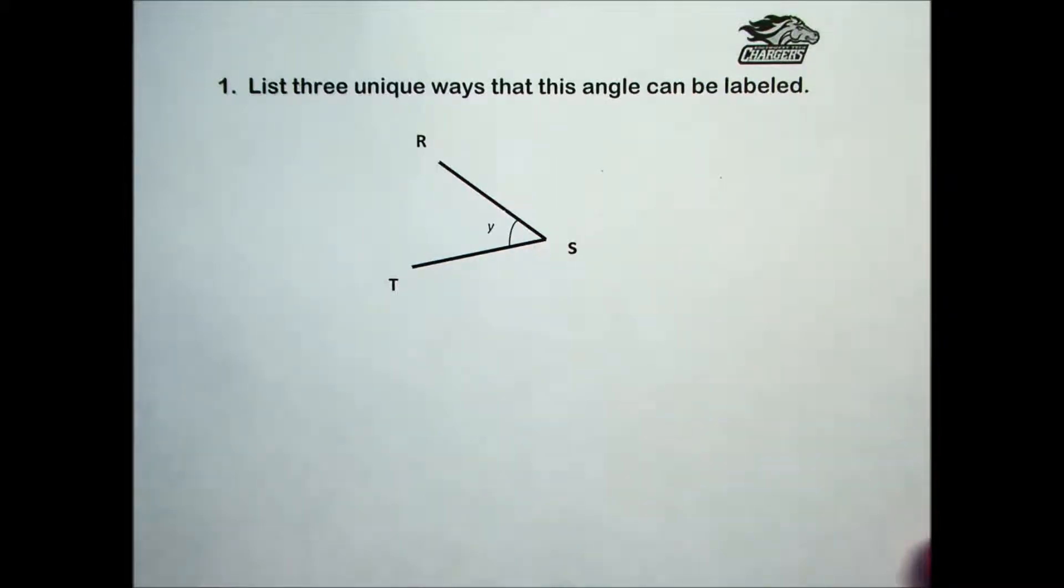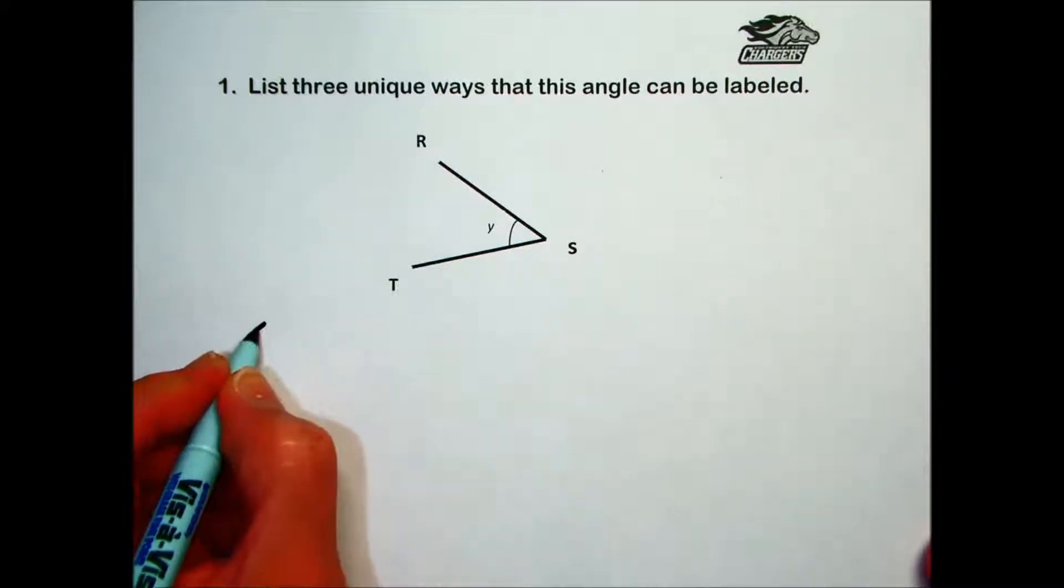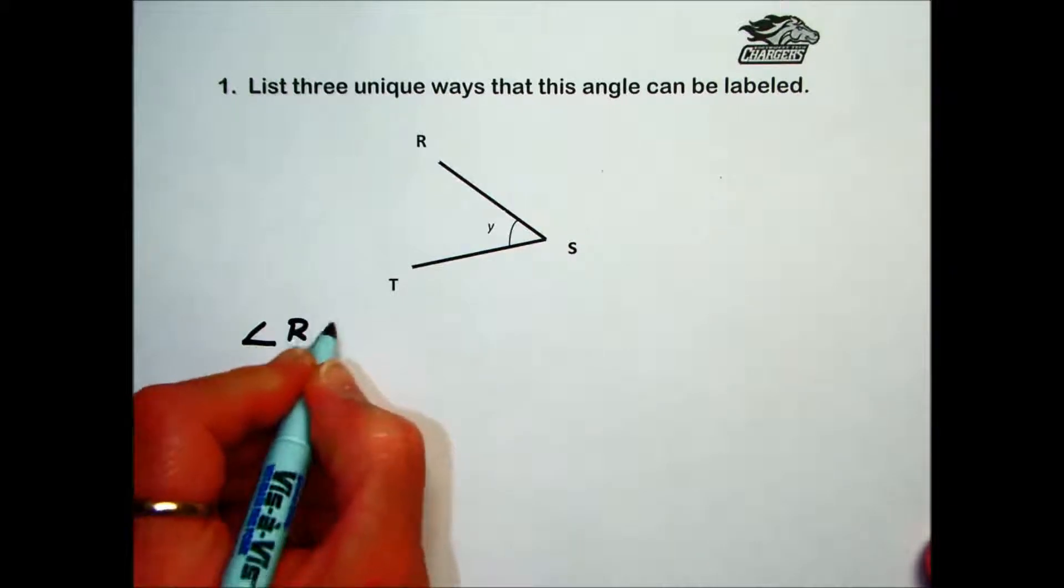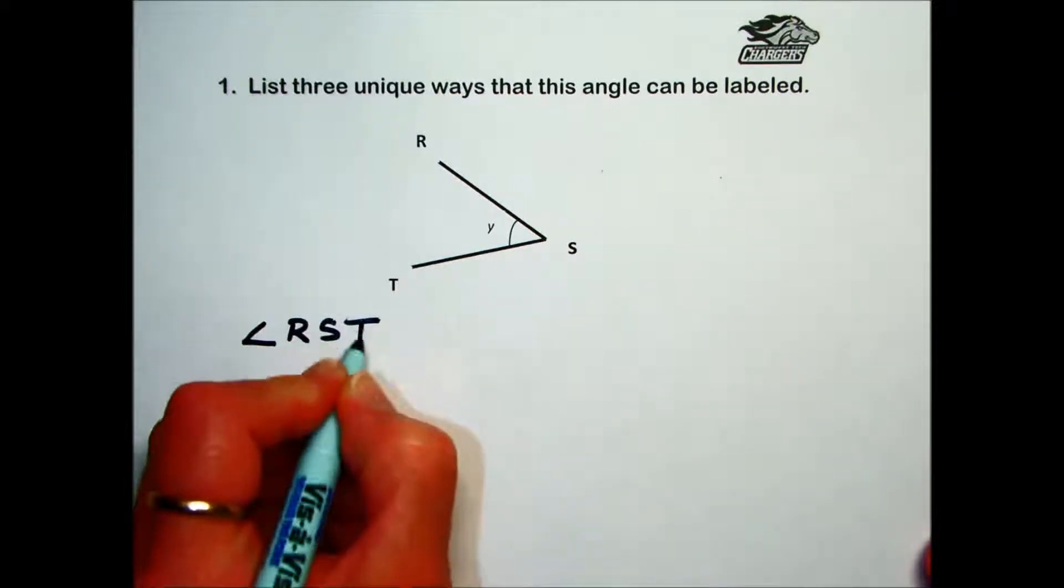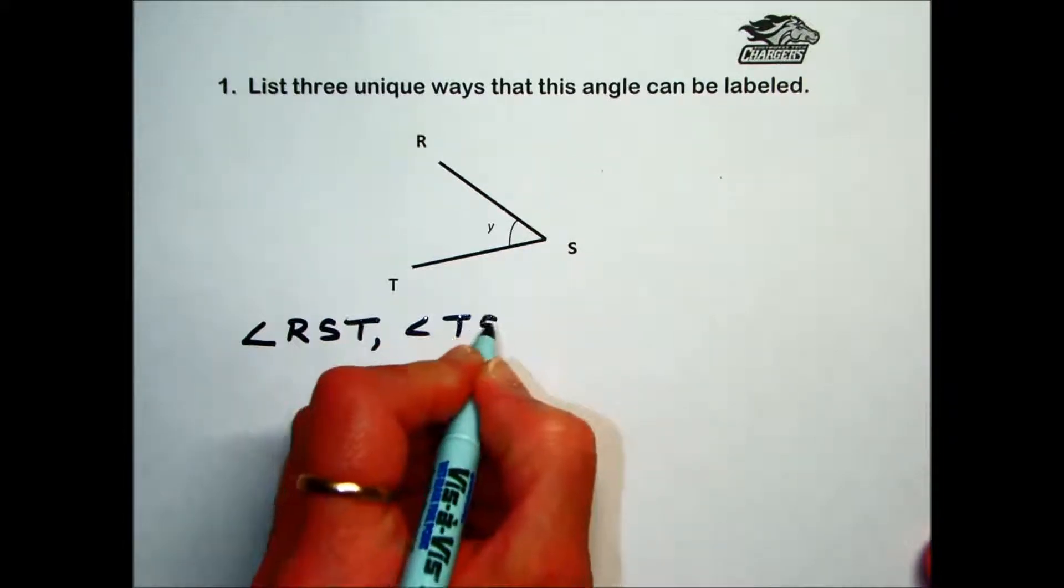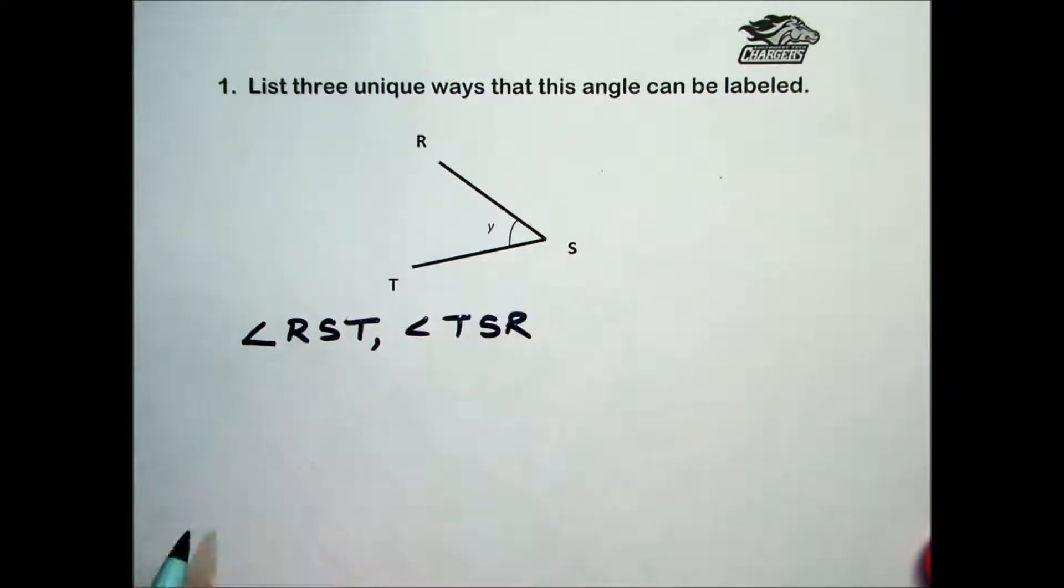We'll start by using the three-letter system where we use this symbol to represent angle. So we could call this angle RST. We could also call it angle TSR. Both of these are considered equivalent. The important thing is that the vertex, the point where the two sides of the angle come together, must always be in the middle.